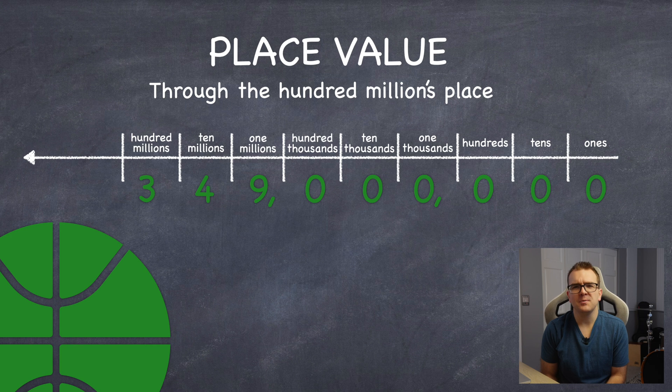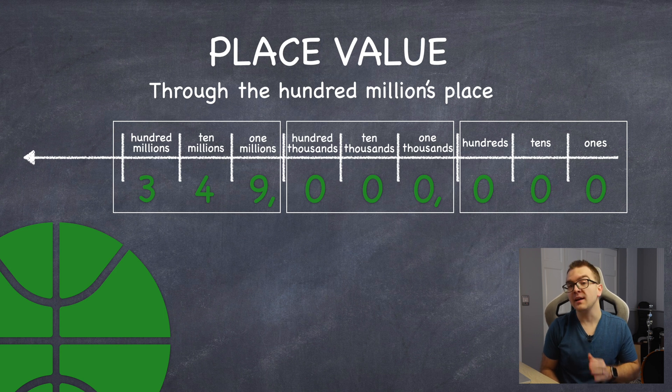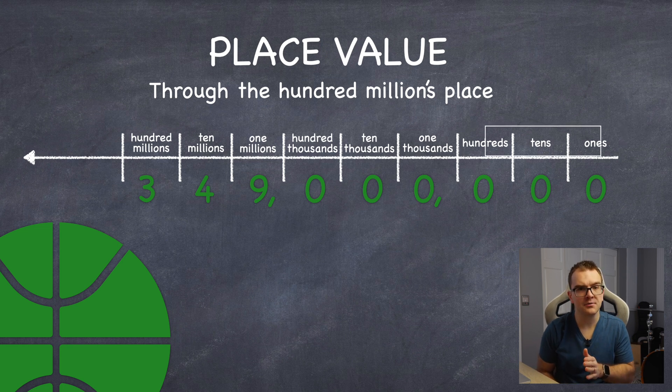Something to note as well, as we get into bigger numbers, we need to make sure we separate each section with a comma, so every three places to the left. Now, notice how each comma separates each section or category, that being the normal ones, tens, hundreds, and then thousands, millions, and so on.